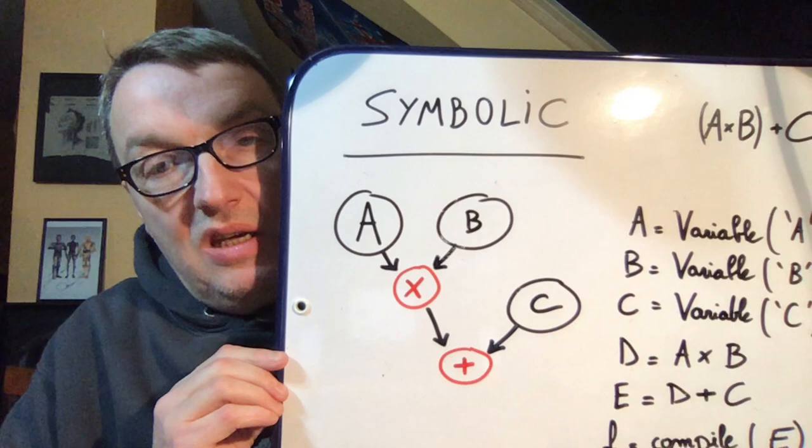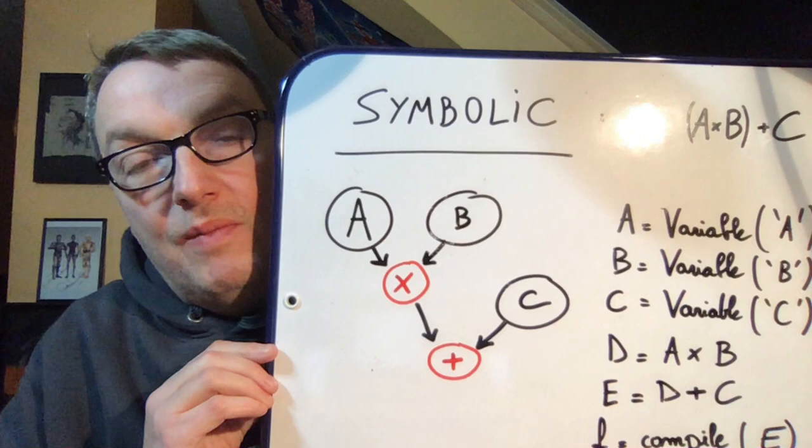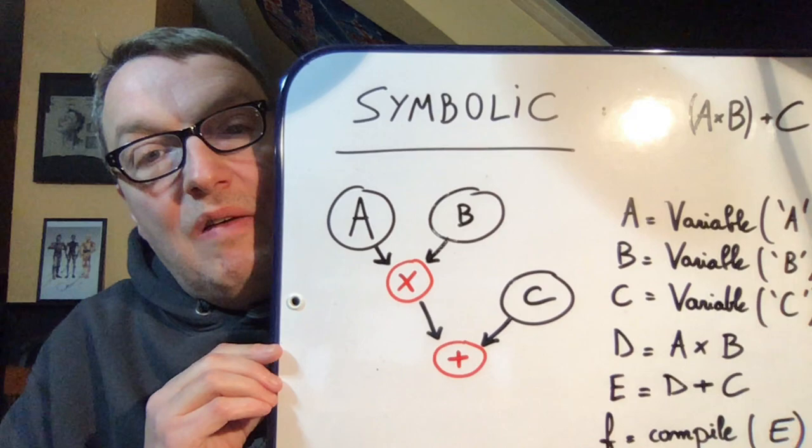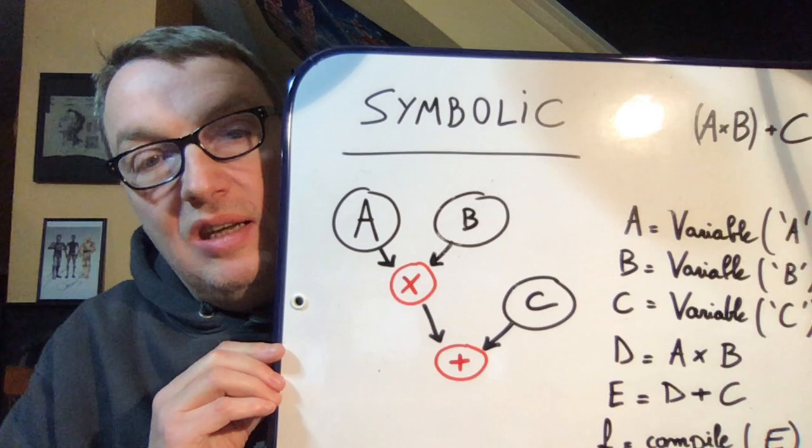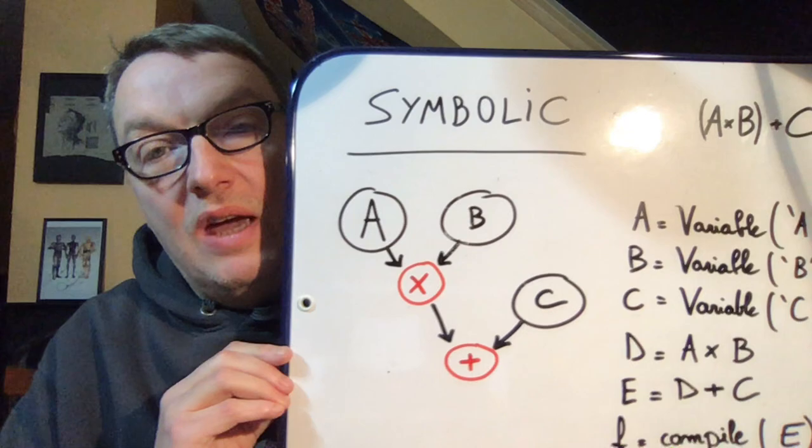And we would combine them in a graph just like this. So A and B feed into the multiplication operator, and then feed the result of that and C to the plus operator, and that would give us our result.